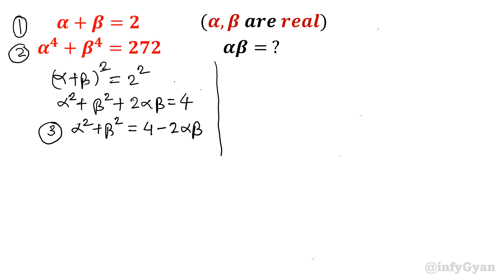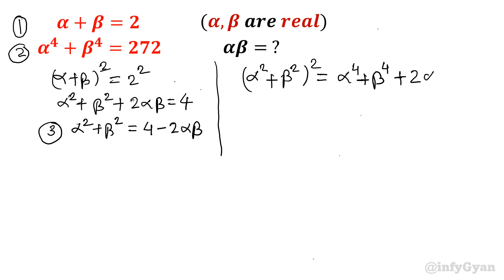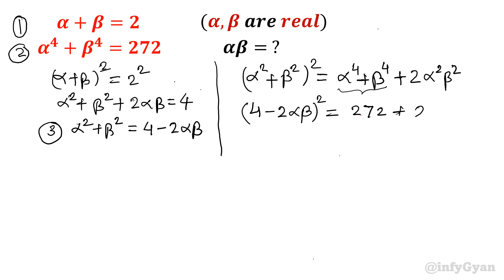Now, looking at alpha power 4 plus beta power 4, I take alpha square plus beta square whole square, which expands as: alpha power 4 plus beta power 4 plus twice alpha square beta square. Substituting from equation 3, the left side becomes 4 minus 2 alpha beta whole square, and from equation 2 the right side gives us 272 plus twice alpha square beta square.